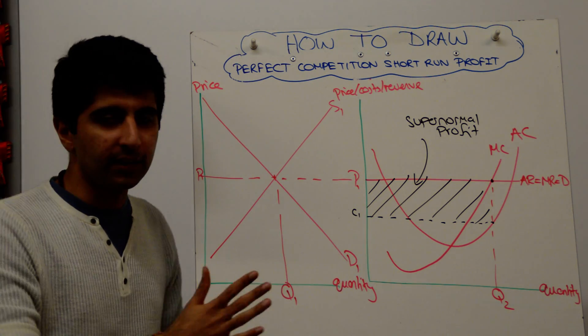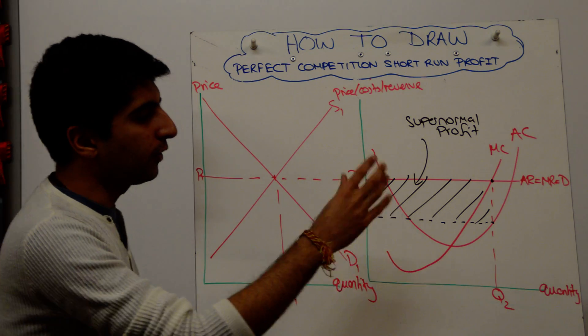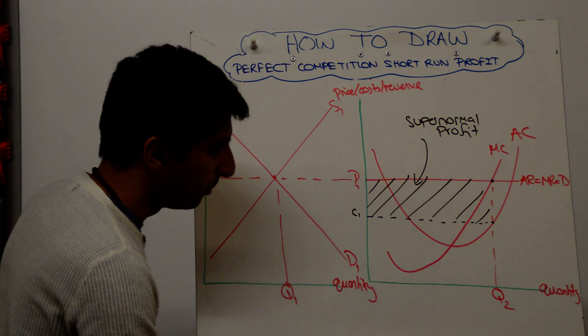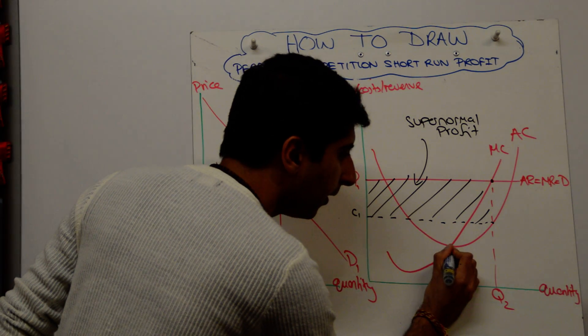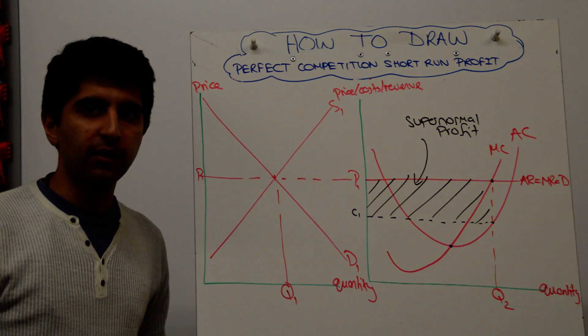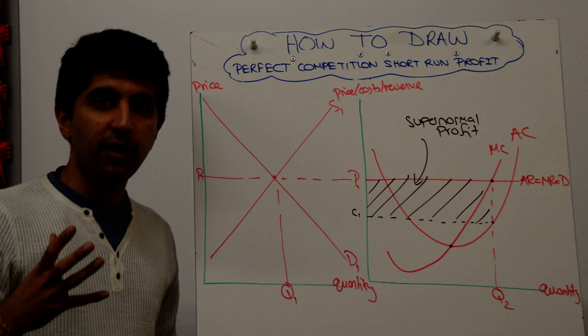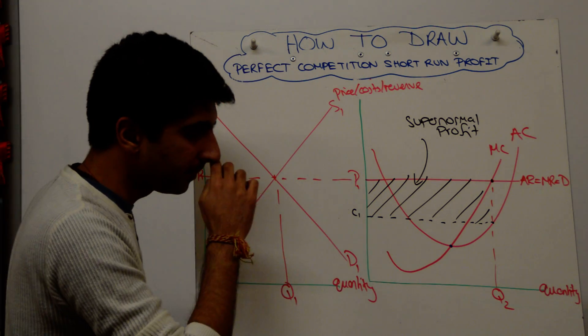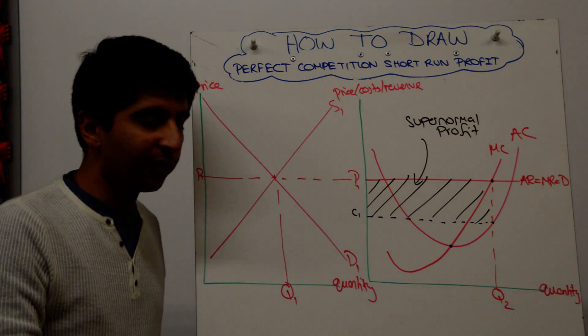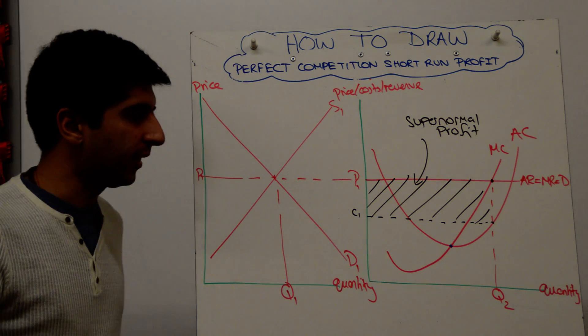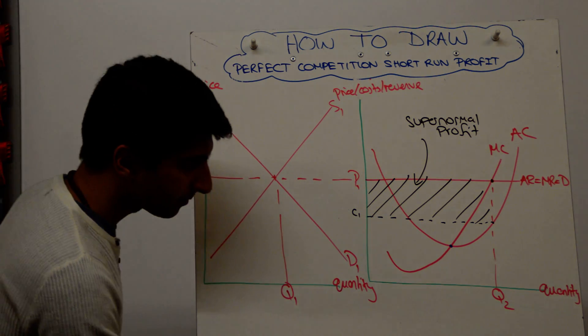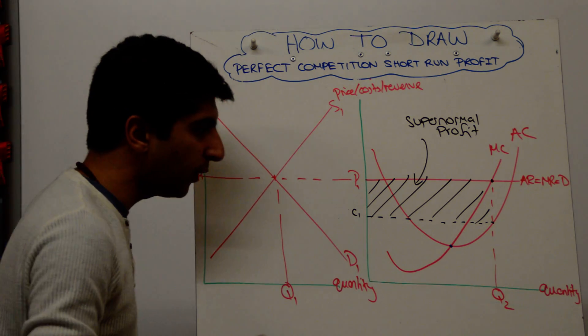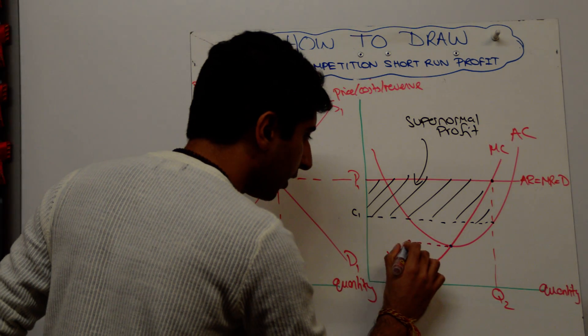So you know that the long-run position is going to be here, the blue dot. That's going to be the long-run profit maximization point for a perfectly competitive firm. Because that is going to be the allocatively efficient point of production. It's going to be the level of normal profit. It occurs there. We know it occurs there. So the way to draw this is starting with that price. So you know that's where you're going to be. That's going to be the new price.